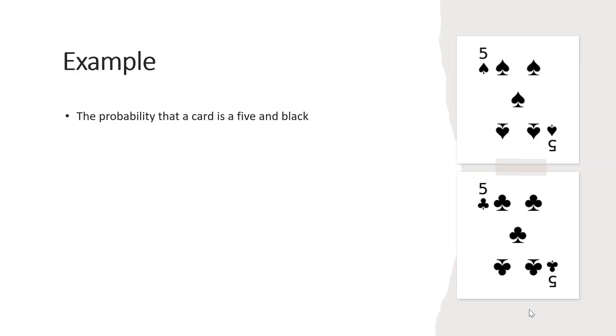Let's take a look at an example. The probability a card is 5 and black from a standard deck is 2 out of 52. We have 52 cards in a standard deck and two of them are black: the 5 of clubs and the 5 of spades. If we simplify that fraction, we get 1 out of 26.